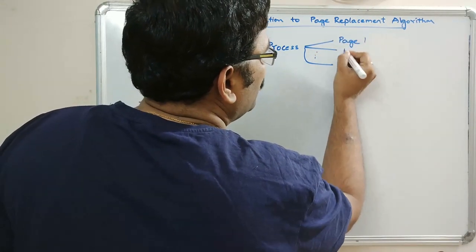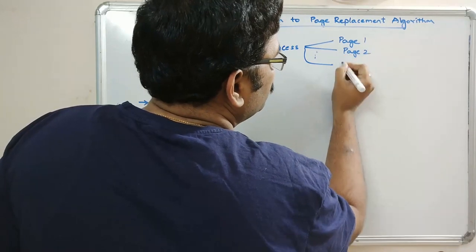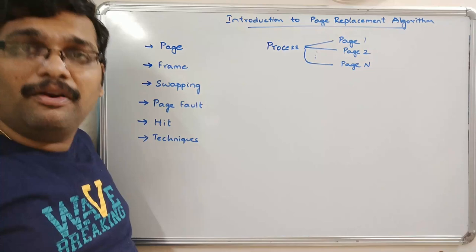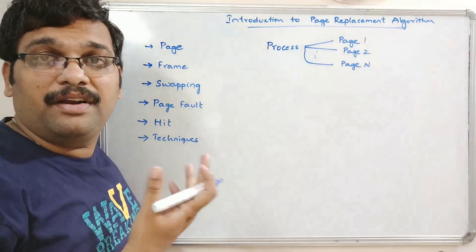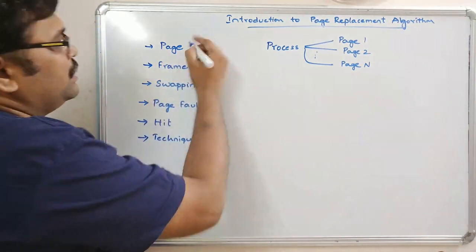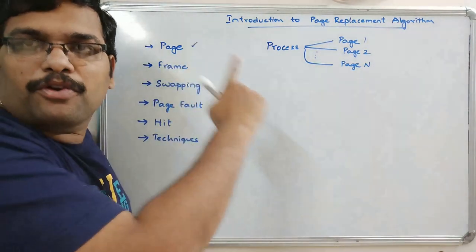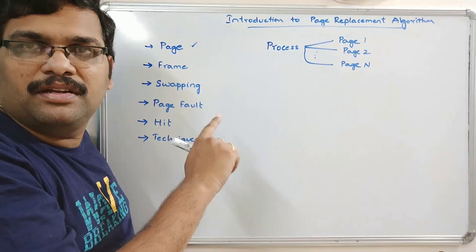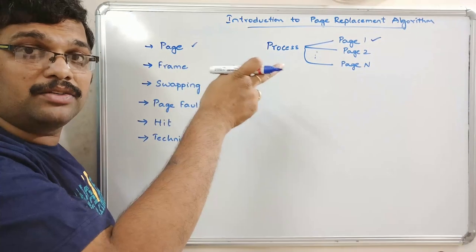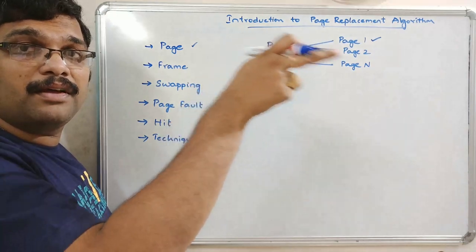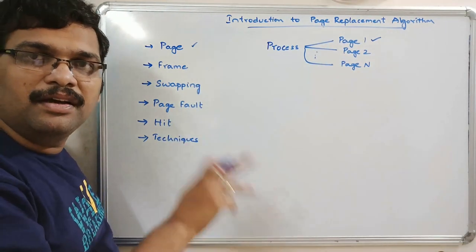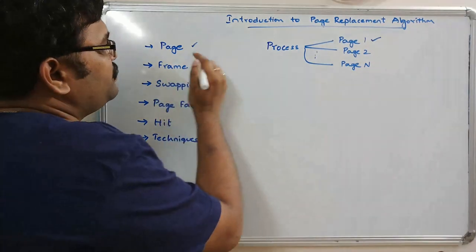A process will have pages: page 1, page 2, up to page N. So a process can be divided into N number of pages — it is a part of a process. If we want to execute page 1 first, page 1 should be loaded from secondary memory to main memory, and then it will be executed by the processor.